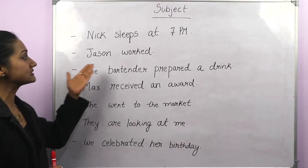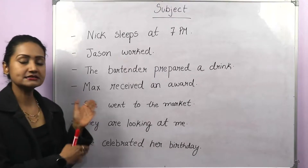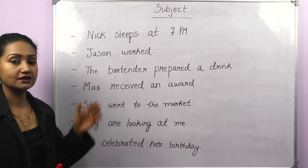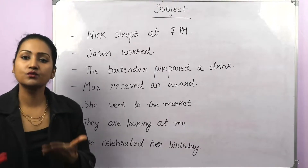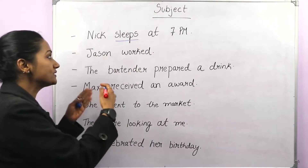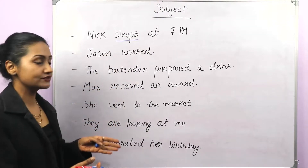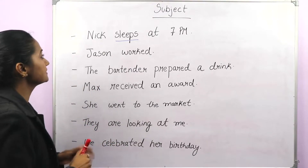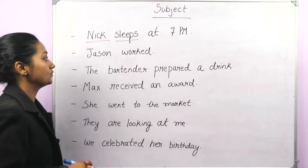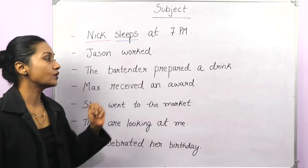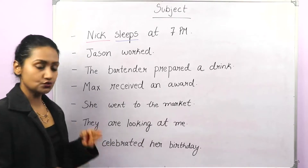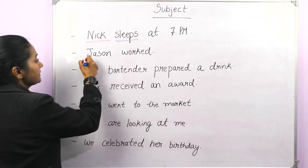First one is 'Nick sleeps at 7 p.m.' So in this sentence, who is the doer — who is doing the main action? The main action is sleep, that's the main verb. So who sleeps at 7 p.m.? Nick. So Nick is the subject here. In the second sentence, 'Jason worked.' The main verb is work. Who worked, who is the doer? Jason. So Jason is the subject here.